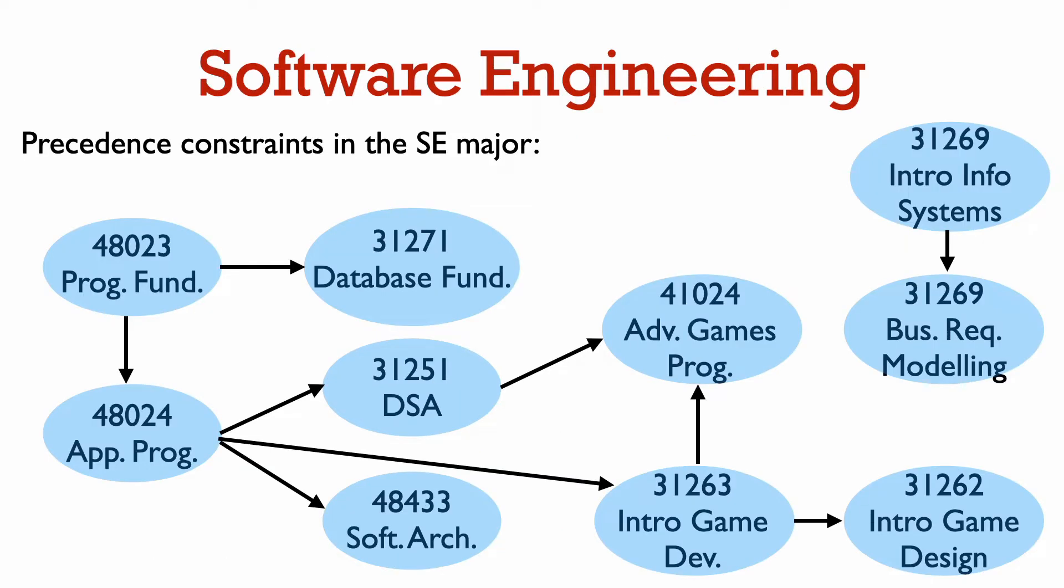Here is another example representing prerequisite constraints in the software engineering major at UTS. You have to take programming fundamentals before applications programming, and you have to take applications programming before taking our course data structures and algorithms. You also, for example, have to take applications programming before software architecture or before introduction to game development.